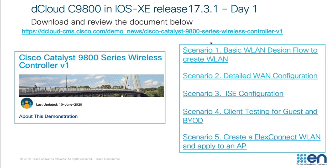Our sessions are divided into five different sections or scenarios. The first scenario is basic WLAN design — how to create a WLAN and set up different parameters. Then we'll go into detailed WLAN configuration with advanced parameters. Scenario three covers how to set up ISE for authentication and authorization purposes in a wireless network. Then we'll talk about client testing for guest and BYOD — bring your own device — and how to set up a guest network. Lastly, scenario five covers how to connect and set up FlexConnect APs in a remote network.